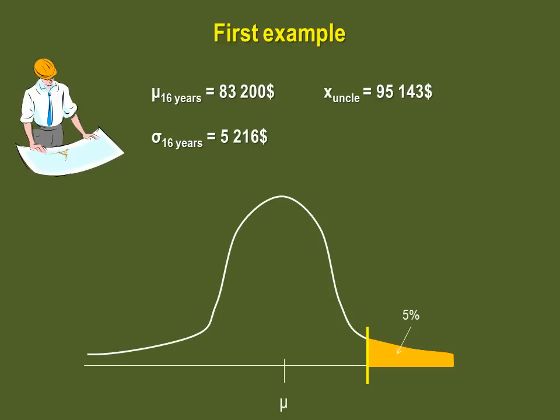Our Z table gives us areas to the left, so we must find the Z-score associated to an area of 0.95. Look it up in your table. You should find a Z-score of 1.645.